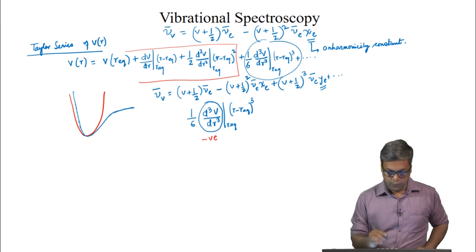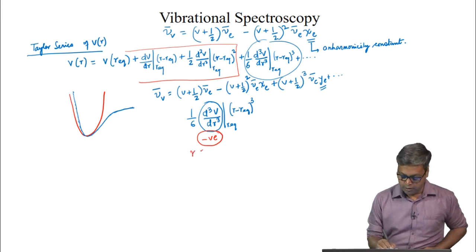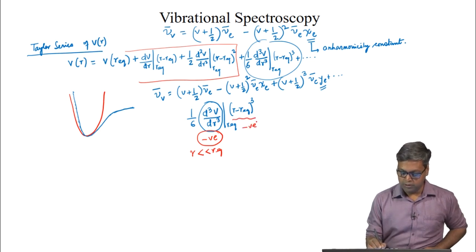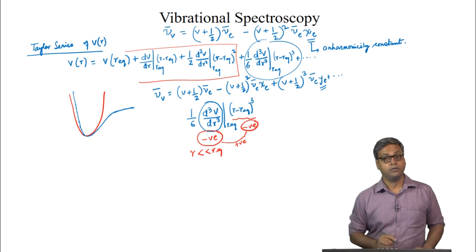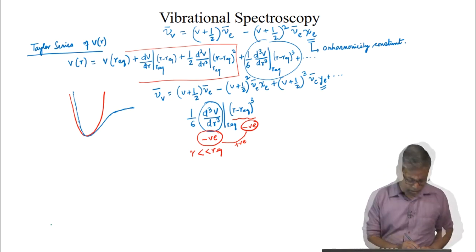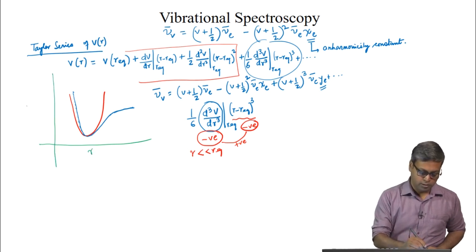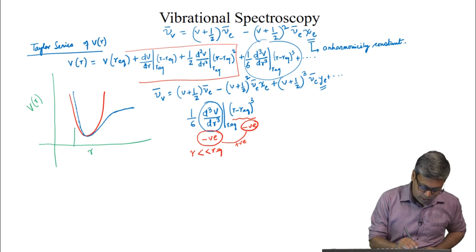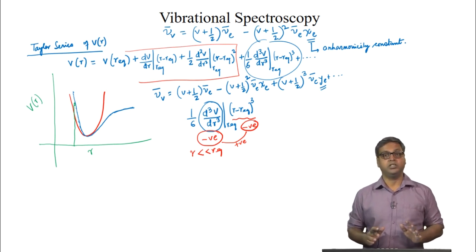This is because if this third derivative is negative and r is much less than r_equilibrium, then the cube term is also negative, so the product becomes positive. This means that for some value of r, V(r) will have a larger value — meaning the potential will be steeper at r less than r_equilibrium.